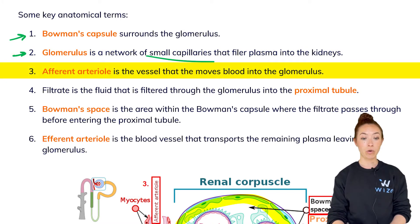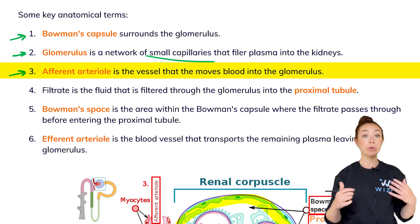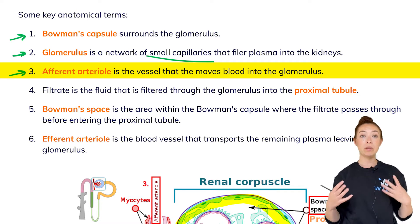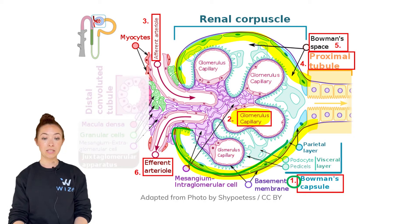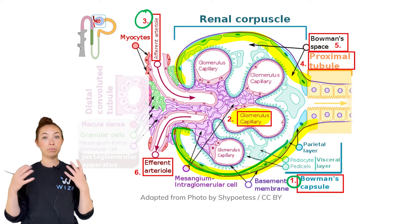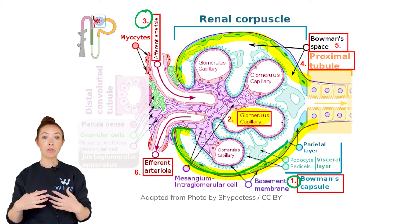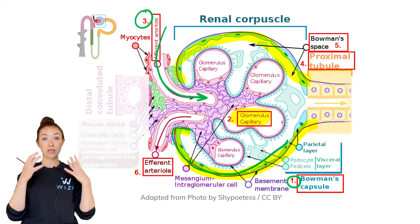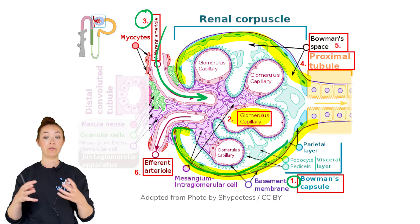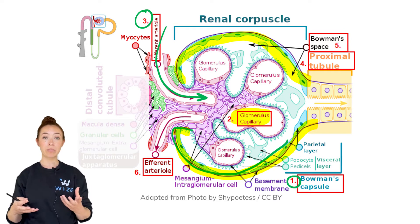Next we have the afferent arteriole, which is the blood vessel that brings blood into the glomerulus. Blood comes from bigger arteries and branches into smaller arteries until it becomes an afferent arteriole. Every nephron has its own afferent arteriole. Eventually this arteriole becomes small enough to be called a glomerular capillary, and then it becomes thicker again and leaves the nephron.